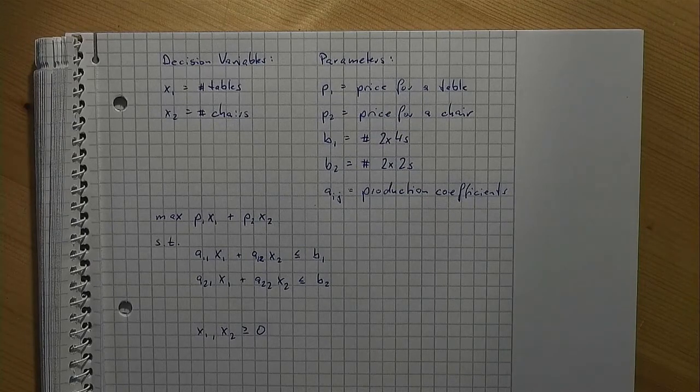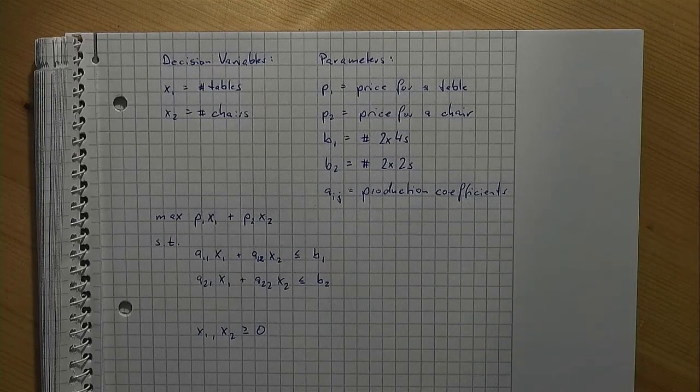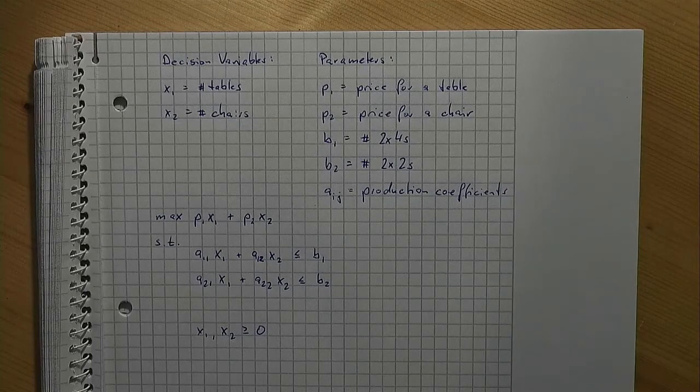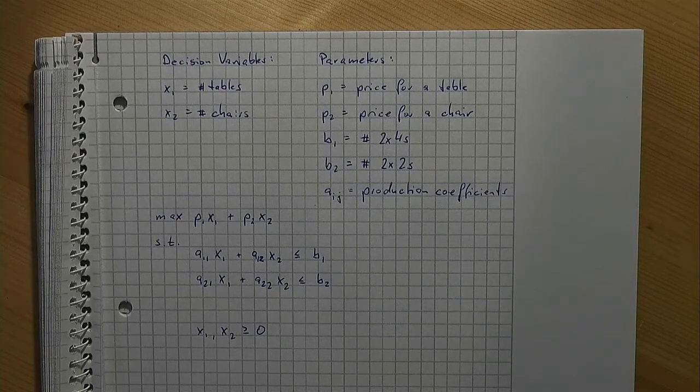Imagine now that a table should always cost at least twice as much as a chair. How would you process that additional information? Think about it and pause the video now.